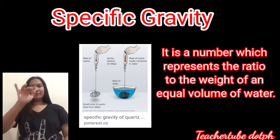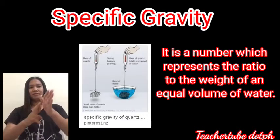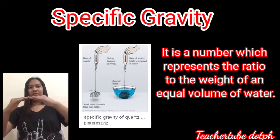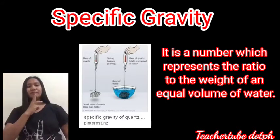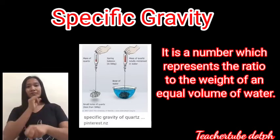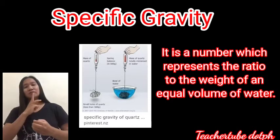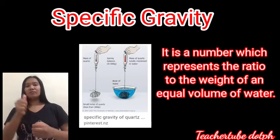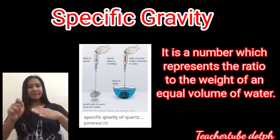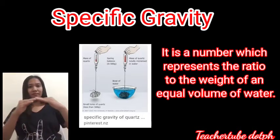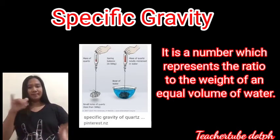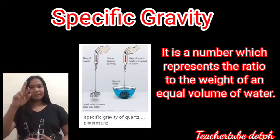The next physical property is specific gravity — a number which represents the ratio of a mineral's weight to the weight of an equal volume of water. Two weights are measured: first when the mineral is not submerged in water, and second when it is submerged in water. The result is the specific gravity.